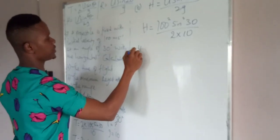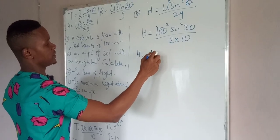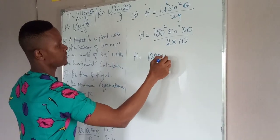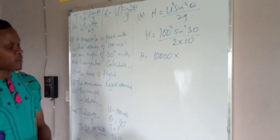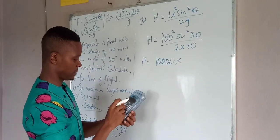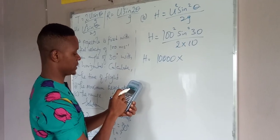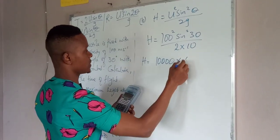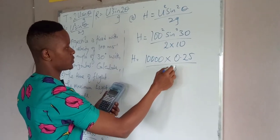That will give us h equal to 100 squared is 10,000 times sin squared 30. Sin 30 is 0.5 squared, which gives us 0.25 all over 20.